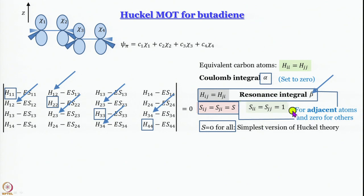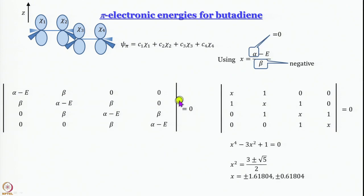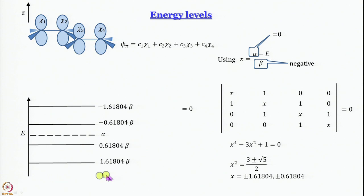The overlap integral is not set to 0 for all atom pairs in a more advanced Huckel treatment, but we will set it to 0 here. The justification is that we are talking about pi interaction, so overlap is poor and the overlap integral is small. Applying all these conditions to the secular determinant and substituting x = (α − E)/β, x is essentially the negative of energy in units of β. From this we determine the energy levels.